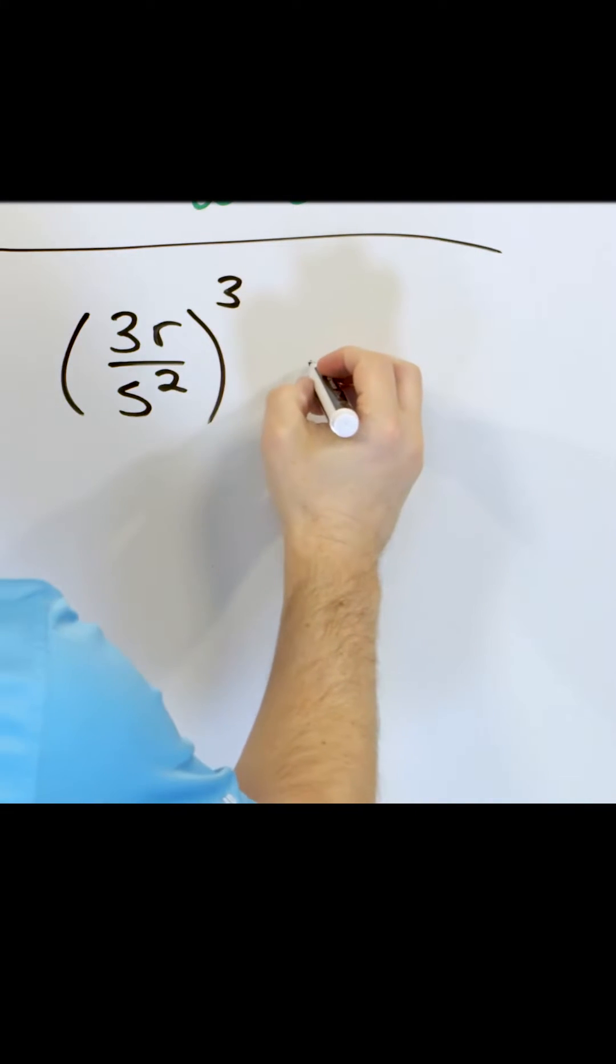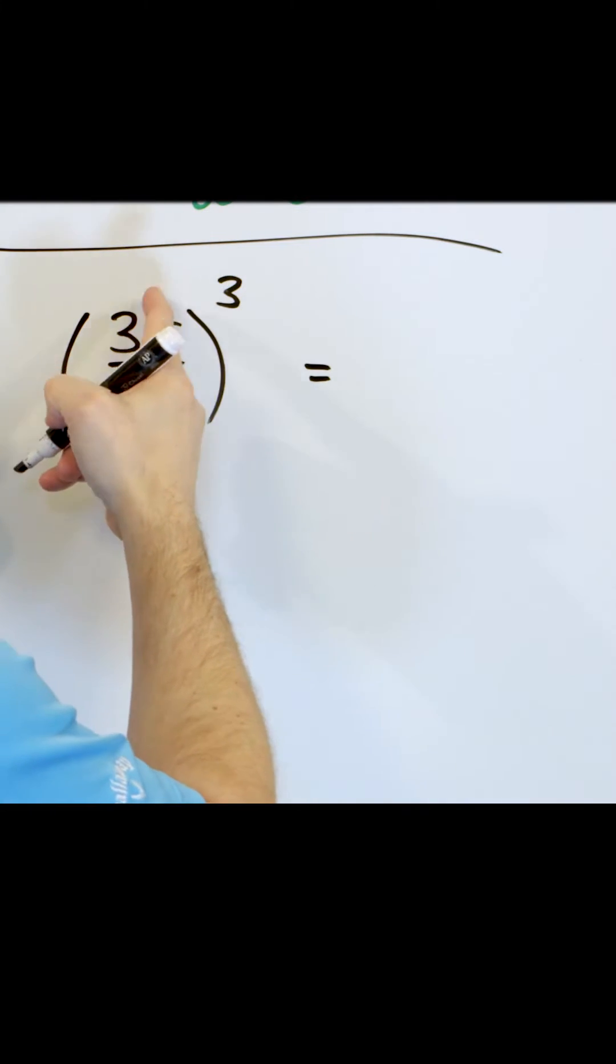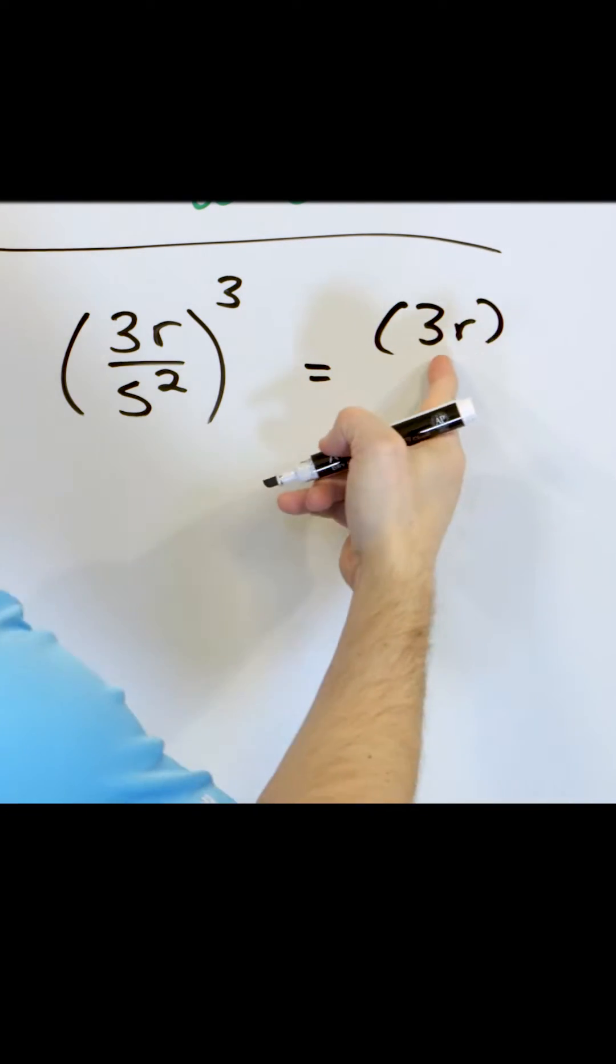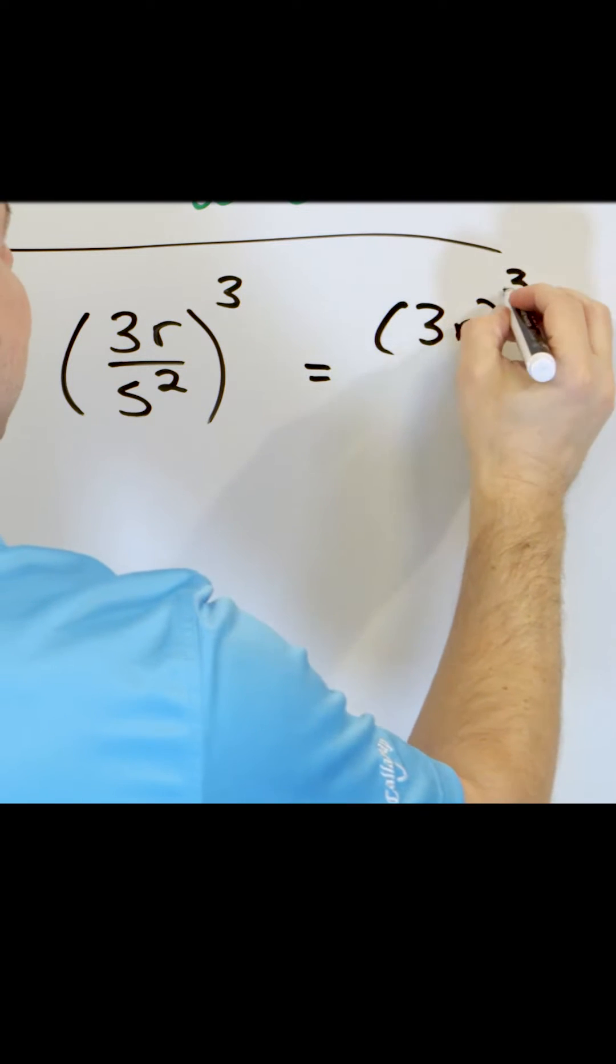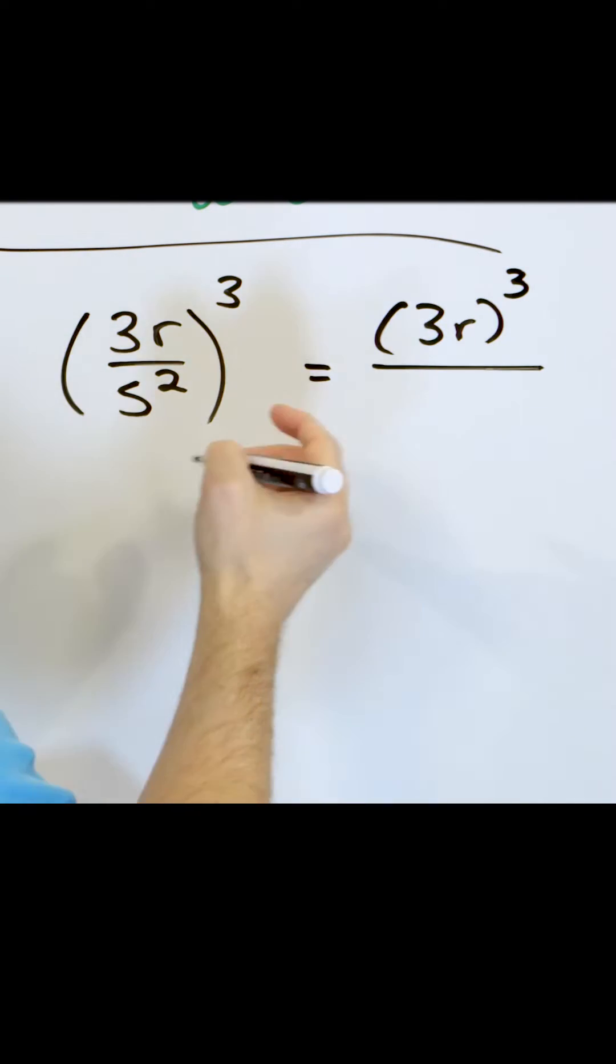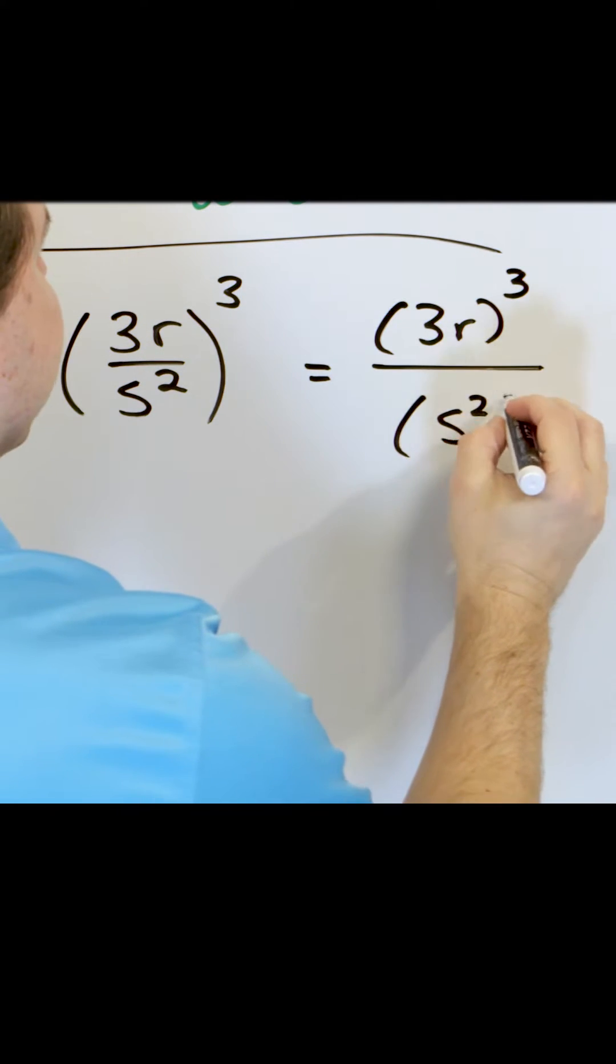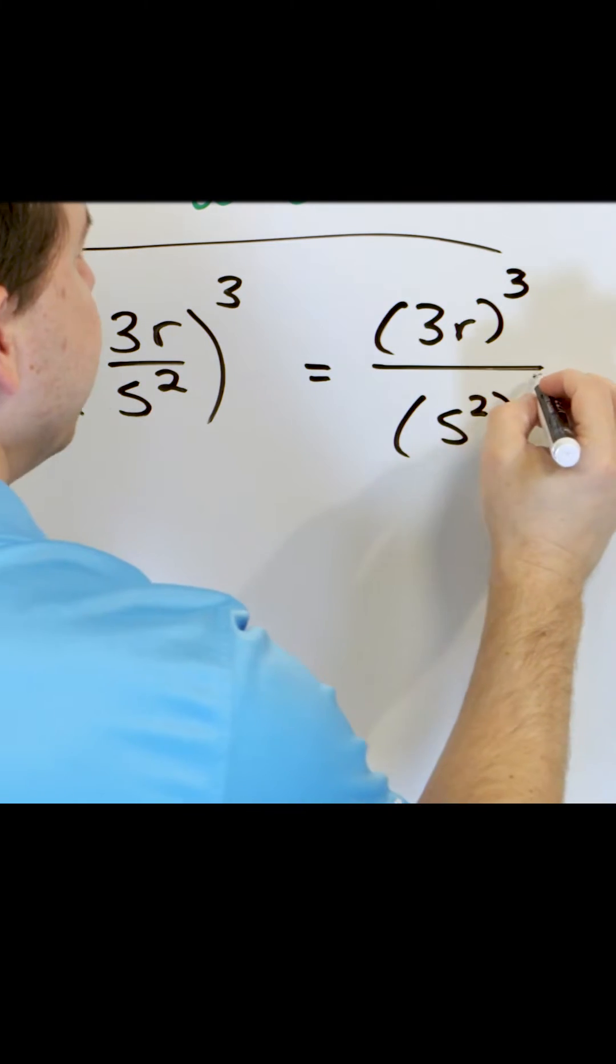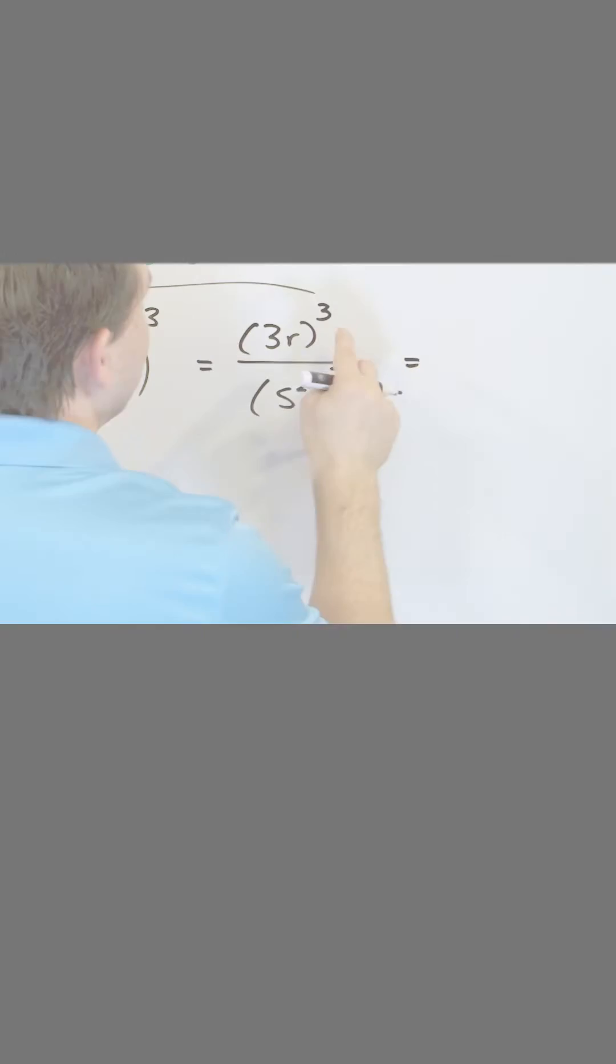So the way we're gonna write that and make it clean is we're gonna apply this to the numerator. But the numerator is a complex thing with 3r. We're gonna raise that to the third power and then we're gonna apply that to what we have here. s squared is the denominator which has to be raised to the third power.